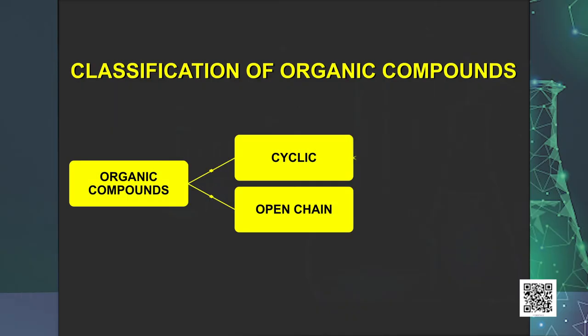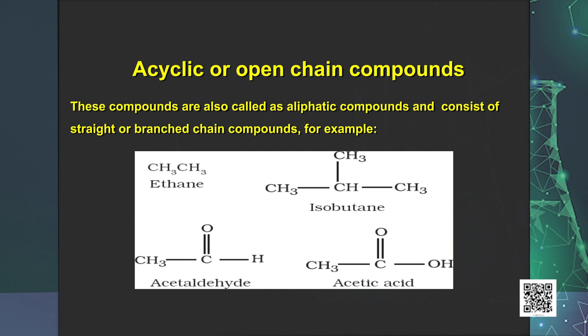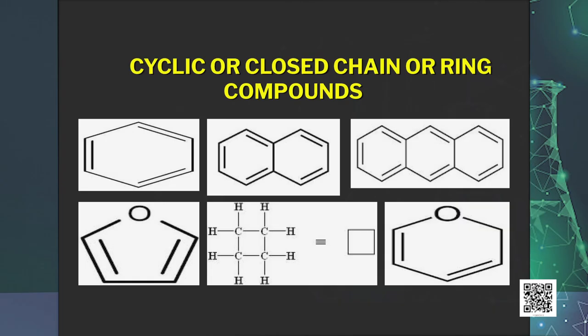Now we discuss the classification of organic compounds. The need to classify organic compounds arises from the fact that a large number of organic compounds exist and their number is constantly increasing. Hence, it has become necessary to classify them on the basis of their structures. Let us first talk about acyclic compounds, also called aliphatic compounds, which consist of straight or branched chain compounds — for example, ethane, isobutane, acetaldehyde, acetic acid, etc. Next are cyclic compounds, also known as closed chain or ring compounds. These compounds contain one or more closed chains or rings of atoms in their molecules, such as cyclopentane, benzene, and anthracene.